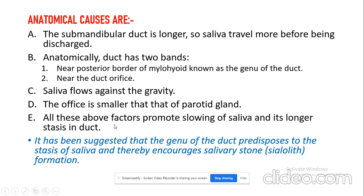If you have to write down only a single cause, the most accepted cause is the genu of the duct. The genu predisposes to stasis of saliva and increases the formation of salivary stones or sialoliths.